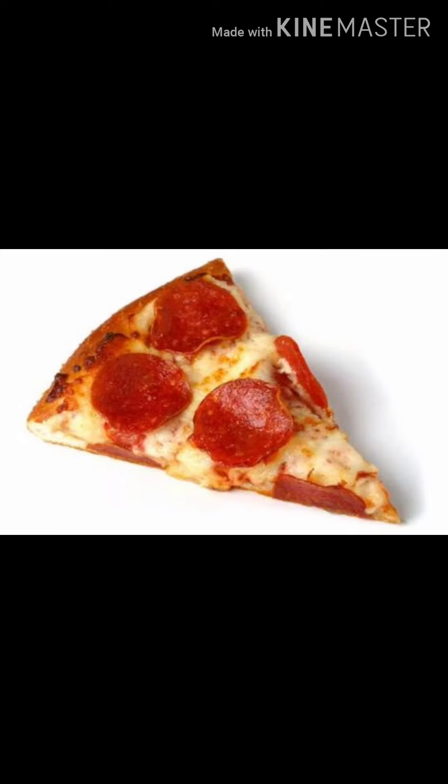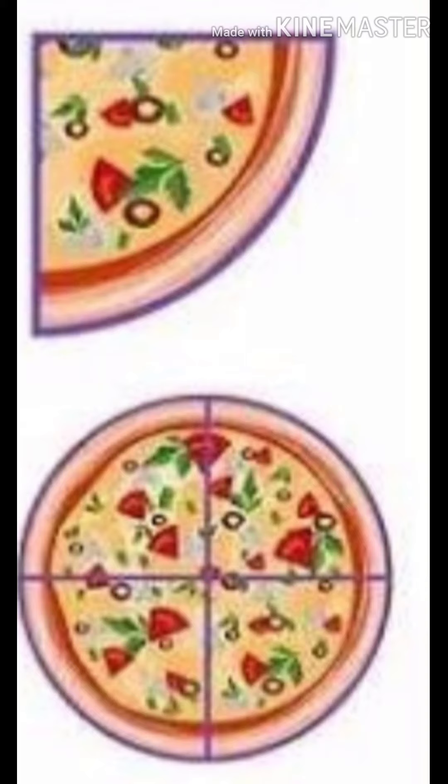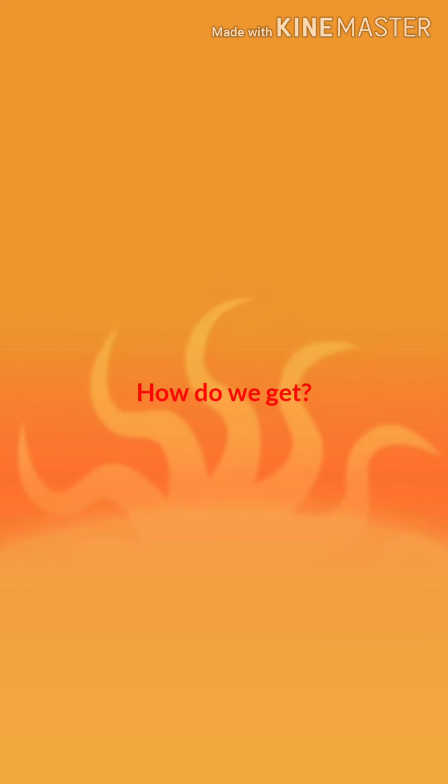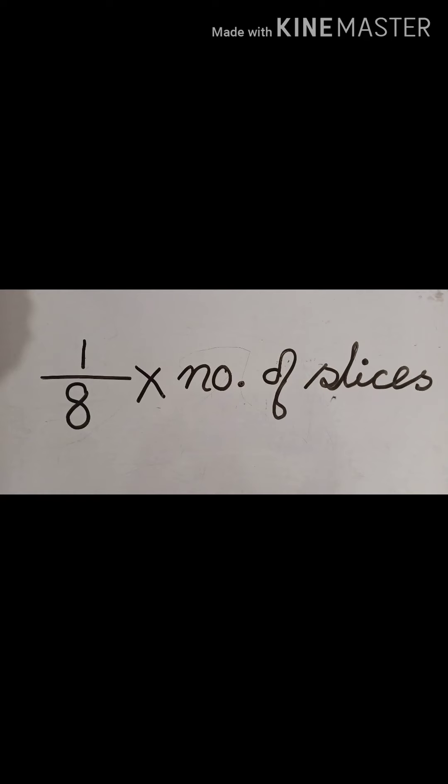You are asked to cut slices out of this one fourth portion such that each slice is one eighth of the total pizza. This part of the pizza is one fourth, and each slice should be one eighth of the total pizza. So how many slices will you get?